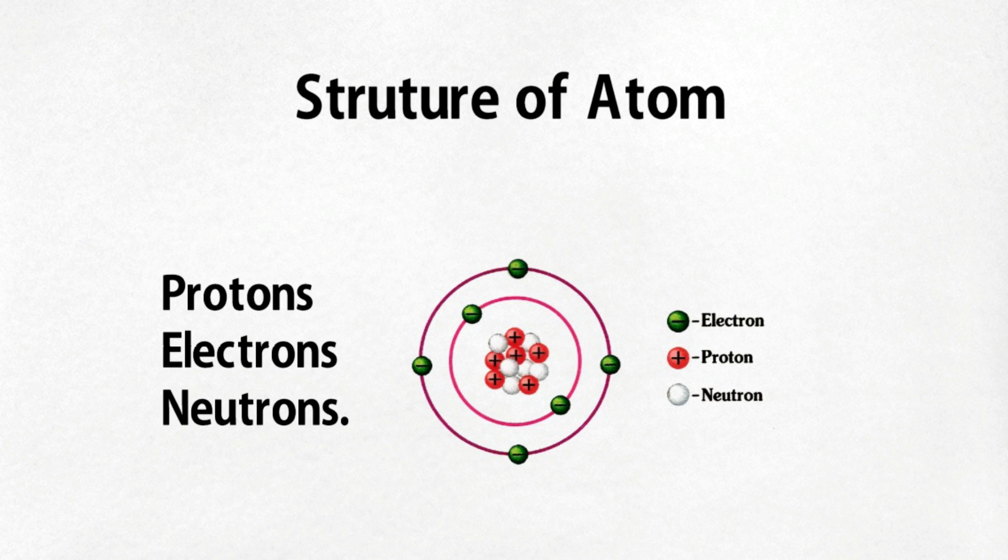A particular atom will have the same number of protons and electrons, and most atoms have at least as many neutrons as protons. Protons and neutrons are heavier than electrons and reside in the nucleus at the center of the atom.